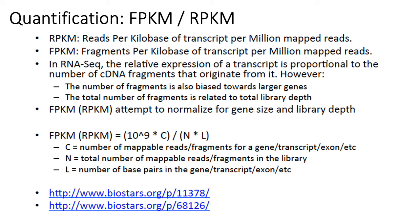For samples where you happen to sequence or successfully align more reads, you'd expect the total count on average to be higher for any given individual gene compared to samples where you sequenced relatively fewer reads. Many metrics have been invented to quantify transcript or gene abundance in a way that normalizes for factors like library depth and gene length. Historically, one of the first and most popular metrics is RPKM (reads per kilobase of transcript per million mapped reads), and FPKM is the paired-end version — counting fragments per kilobase of transcript per million mapped reads.